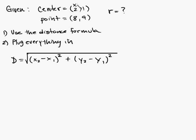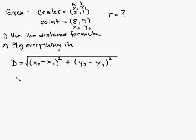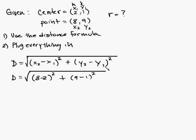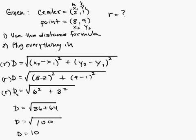In this case, our center is going to be x1, y1, and the point on the circle is x2, y2 — and the center is also h and k. So we calculate: x2 minus x1 is 8 minus 2, quantity squared, plus y2 minus y1 is 9 minus 1, quantity squared. That gives us the square root of 6 squared plus 8 squared, which equals the square root of 36 plus 64, the square root of 100, so d equals 10. The distance is actually the radius, so the radius equals 10.